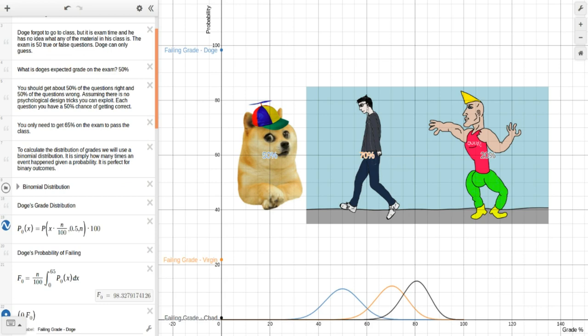So this blue curve is Doge's grade distribution. As you can see, it's centered at 50%. It's perfectly balanced. So he has an equal chance of getting a 40% as well as a 60%. Now Doge's probability of failing is 98% and it's represented by this blue dot. So he has a very, very high chance of failing this class.